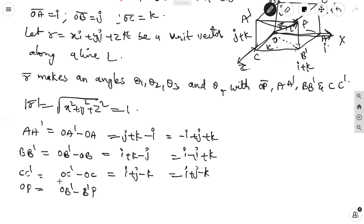CC dash = C dash is i + j − k. Here, OP means that is equal to OB dash minus B dash P, related with the triangle. OB dash minus B dash P becomes OP. OB dash is nothing but i + j + k, since OP is in the x, y, z plane and is the diagonal — the unit vector — so it is i + j + k.